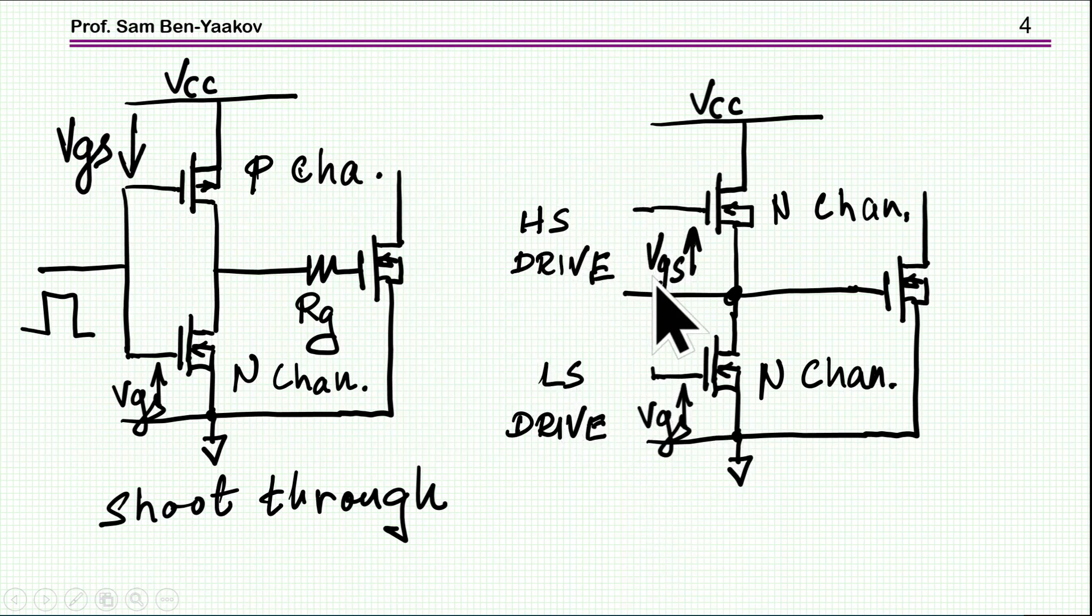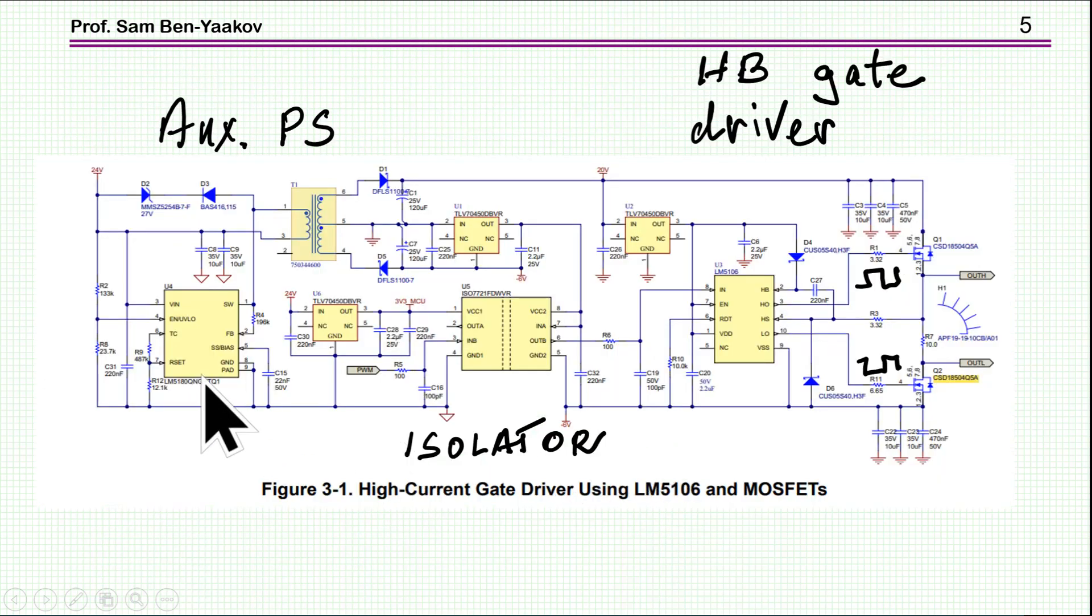So here is the circuit that they suggest. This is sort of a demo board, you might say. And it includes an auxiliary power supply, an isolator for the PWM signal. And then there is a half-bridge driver which is producing two pulses, which of course have to have a dead time between them to avoid a shoot-through. And then this goes to the gate of the transistor or IGBT.